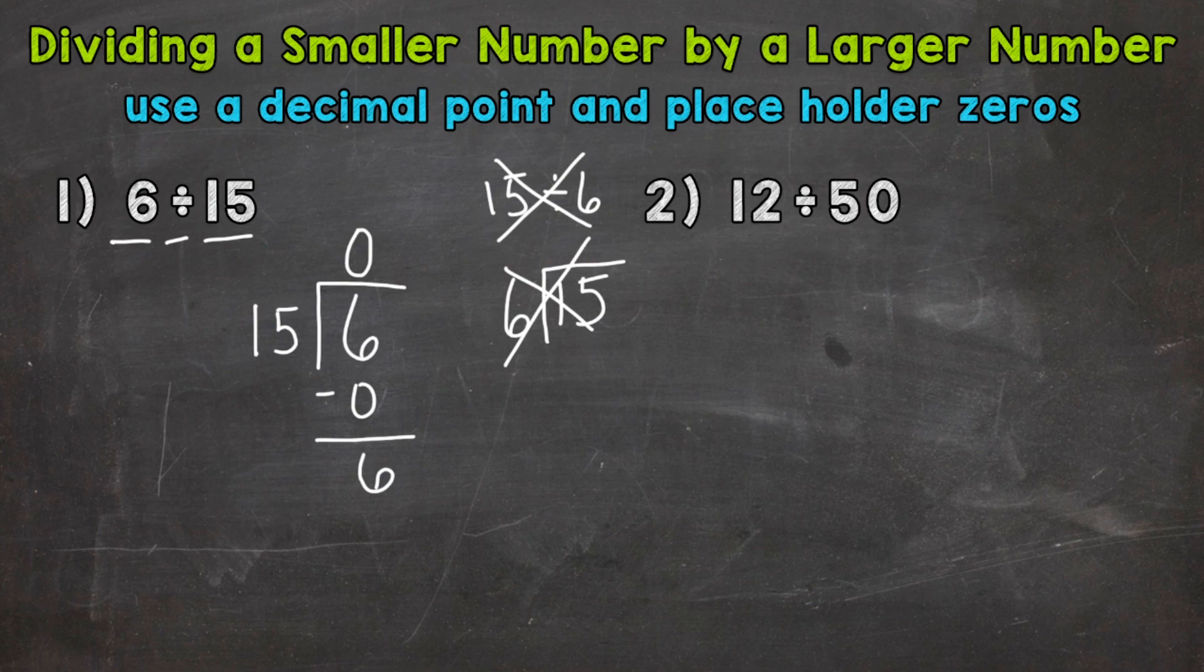So in order to continue here, we need to bring something down. So what we're going to do, we're going to place a decimal point after the 6. So we can place a decimal point after a whole number. The value of that 6 is still 6.